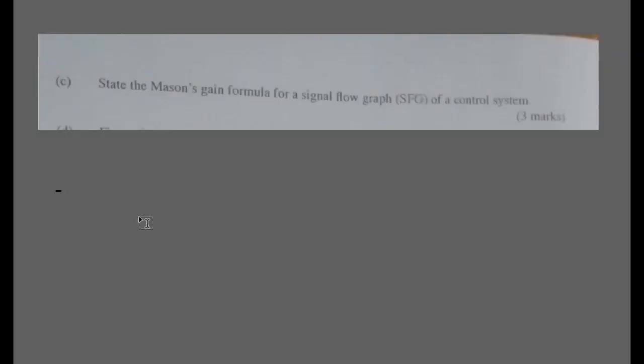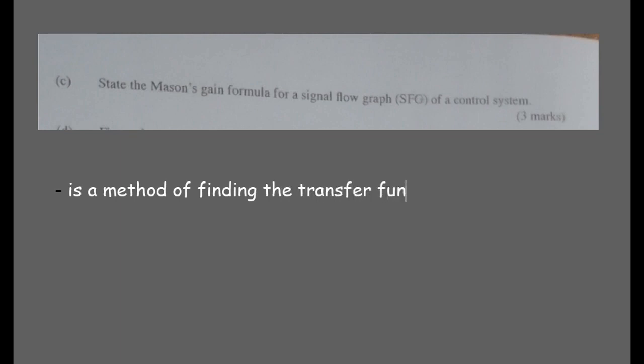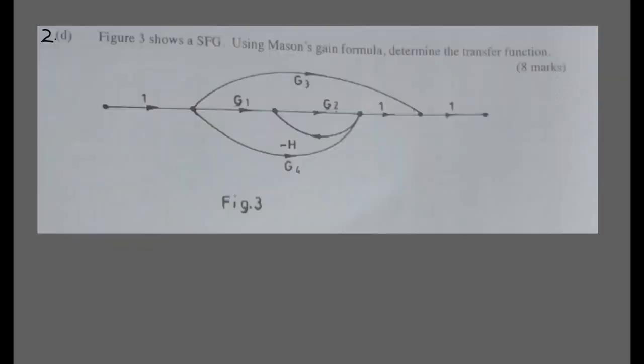Control system and instrumentation. State Mason's gain formula for a signal flow graph of a control system. Mason's gain formula is a method of finding the transfer function of a signal flow graph — specifically, it is used for determining the transfer function of a linear signal flow graph.